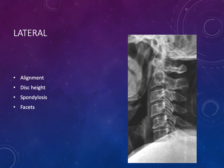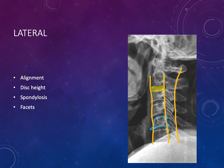The lateral radiograph is also a great place to start. We look at alignment of the vertebral bodies by examining the anterior, posterior spinal lines, and the spinal laminar line. We look at intervertebral disc heights, which indicate the presence or absence of degenerative disc disease. We look at end plate spondylosis — the small osteophytes or spurs at the end plates — which can cause uncovertebral hypertrophy and impingement. Finally, we look at the facet joints for any facet arthrosis.